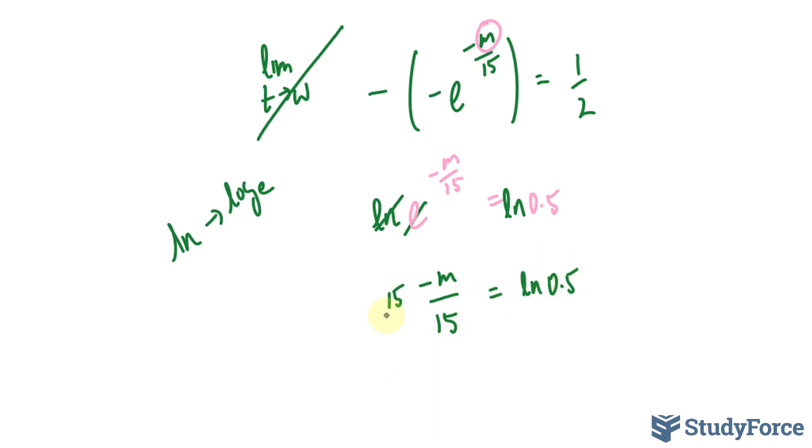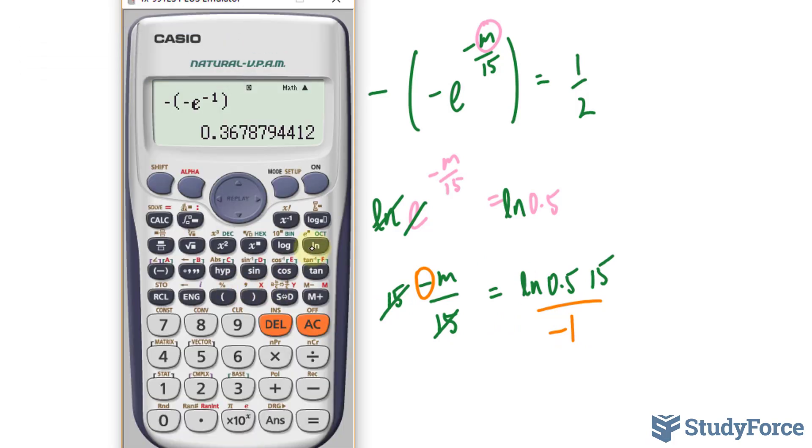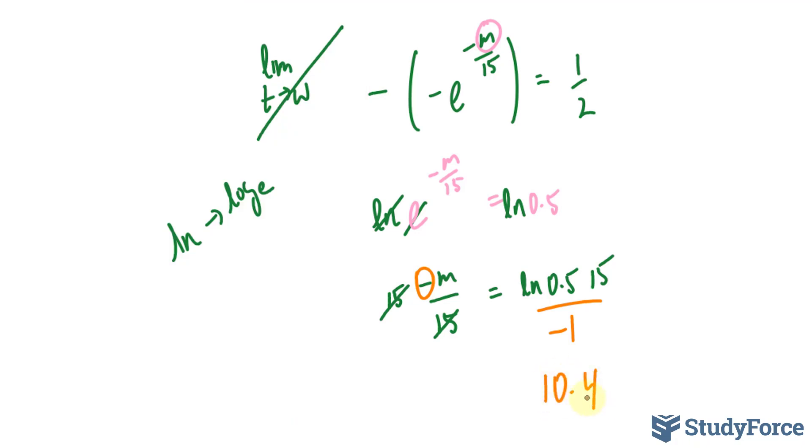Multiply both sides by 15. This cancels. Then divide both sides by negative. Let's use our calculator. ln of 0.5 times 15 divided by negative 1 gives us approximately 10.4.